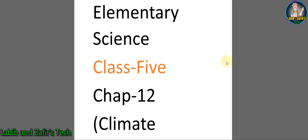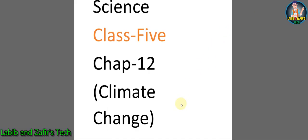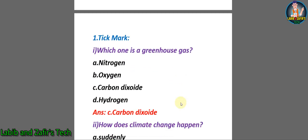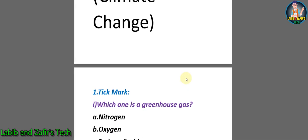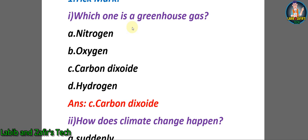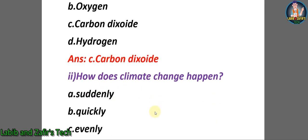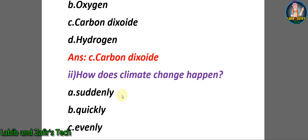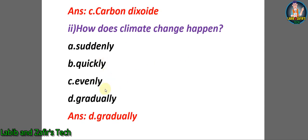Now students, let's go through some tick mark questions for elementary science class 5, chapter 12, Climate Change. Number one: which one is a greenhouse gas? A) Nitrogen, B) Oxygen, C) Carbon dioxide, D) Hydrogen. The answer will be C) Carbon dioxide. Number two: how does climate change happen? A) Suddenly, B) Quickly, C) Evenly, D) Gradually. The answer will be D) Gradually.